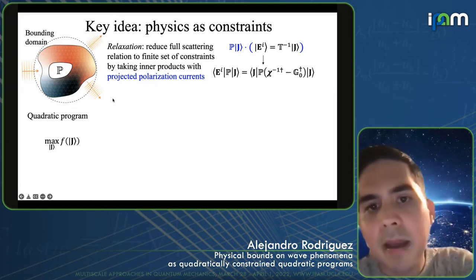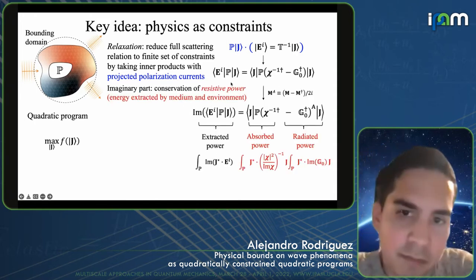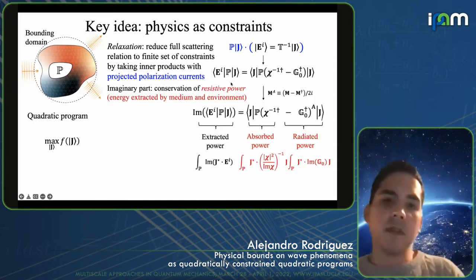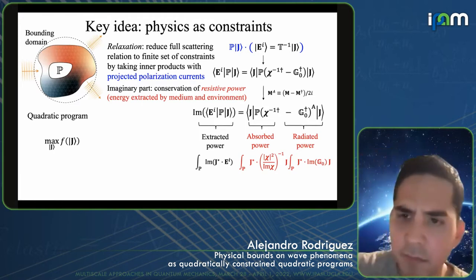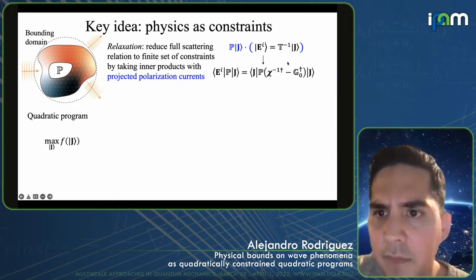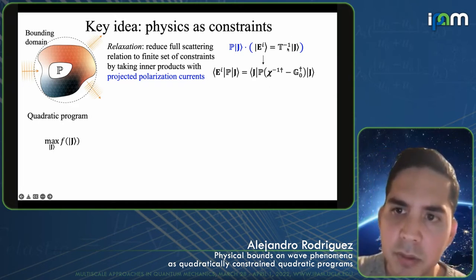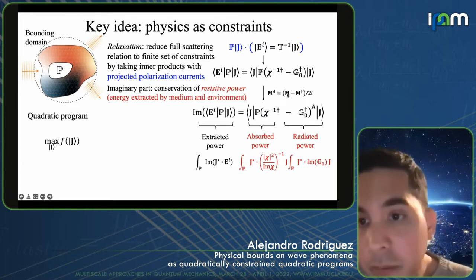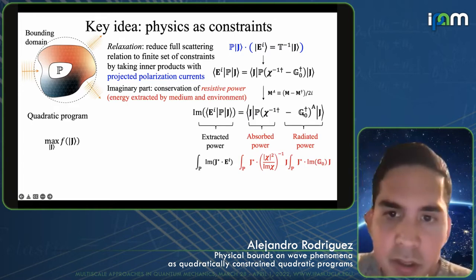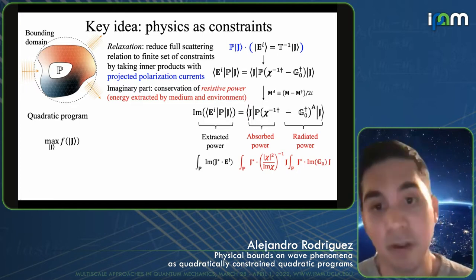These integral relations have a very intuitive physical meaning. I've written here explicitly T-inverse and the explicit relationship between the T operator, the vacuum Green's function, and the susceptibility. The imaginary part of this complex relation has a very intuitive meaning — this is basically Poynting's theorem, a conservation of resistive power. Taking the imaginary part, the left-hand side looks like an integral of the current dotted with the incident field over the volume — basically the extracted power due to that current.